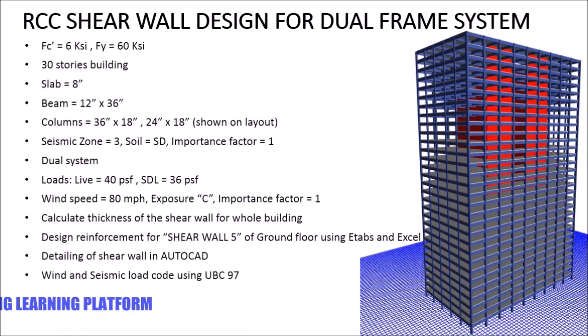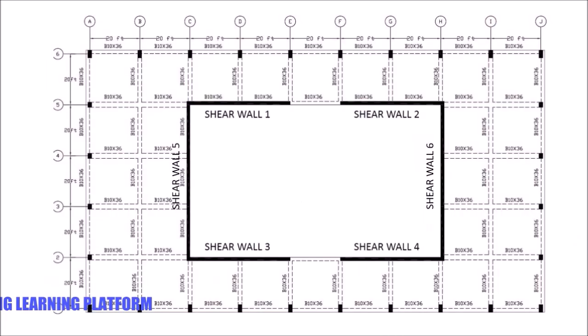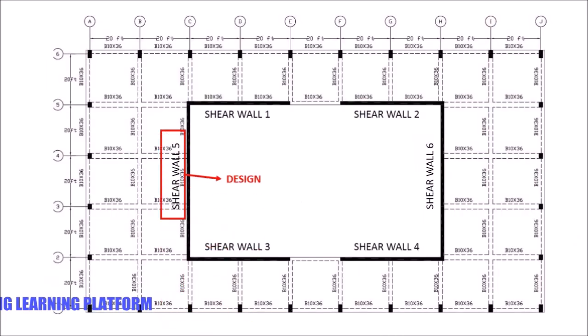The wind and seismic load is to be applied using UBC-97 and the design code is ACI 318-14. The layout of the building is shown and we have to design shear wall 5.